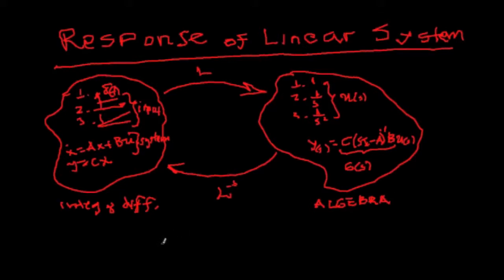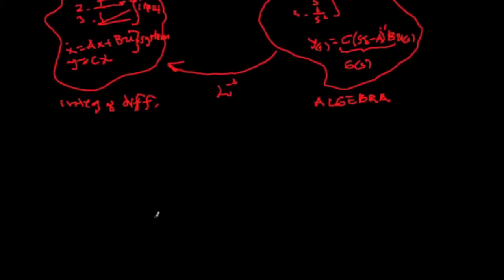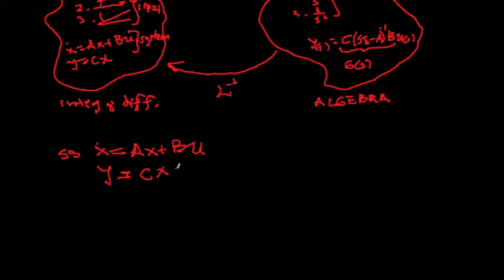Let us demonstrate this point quickly. Let's assume that we have a state space representation: x-dot = Ax + Bu, and y = Cx, where x(t) is a vector, u(t) is a scalar, and y(t) is also a scalar. So we have a single input, single output system.